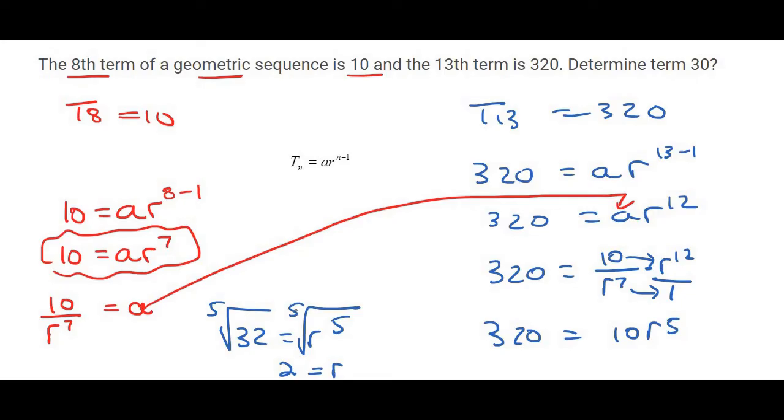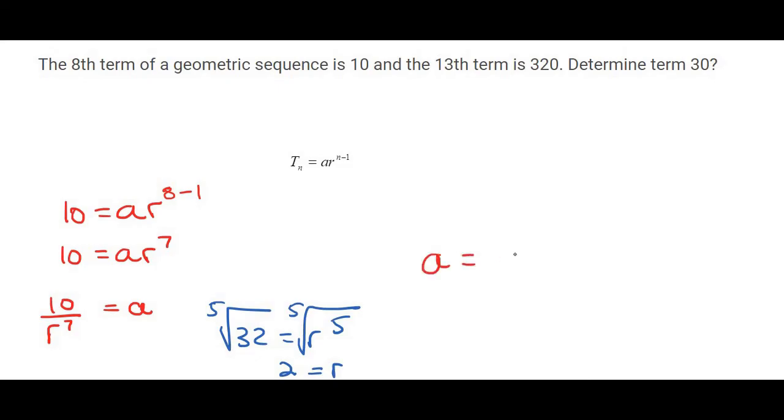Now that you have R, you can get A by plugging it back into this equation, for example. And so that will become A equals 10 over 2 to the power of 7, and that gives us a value of 5 over 64.